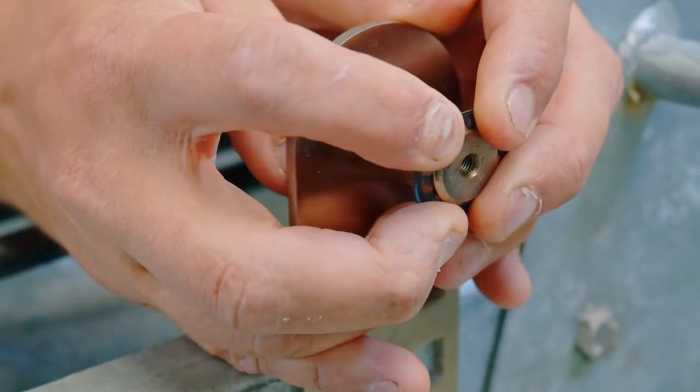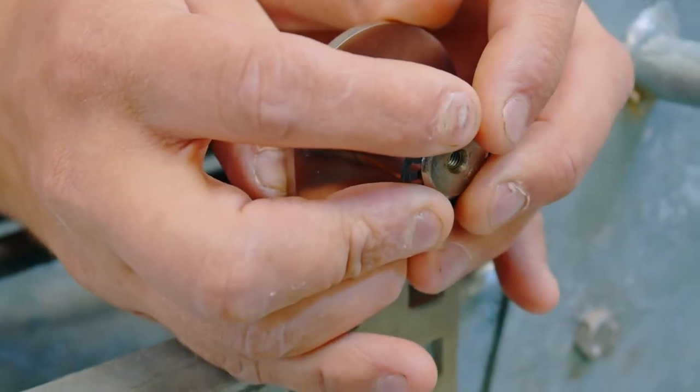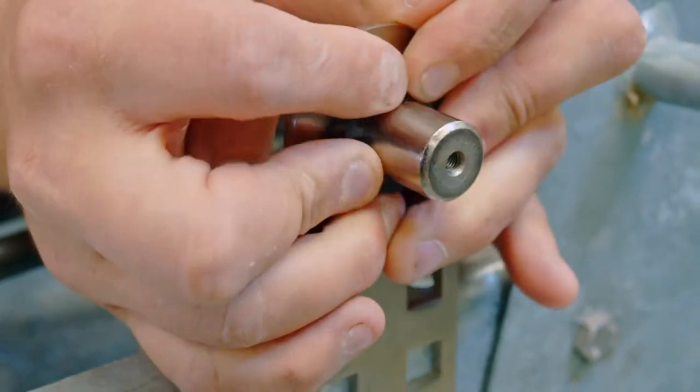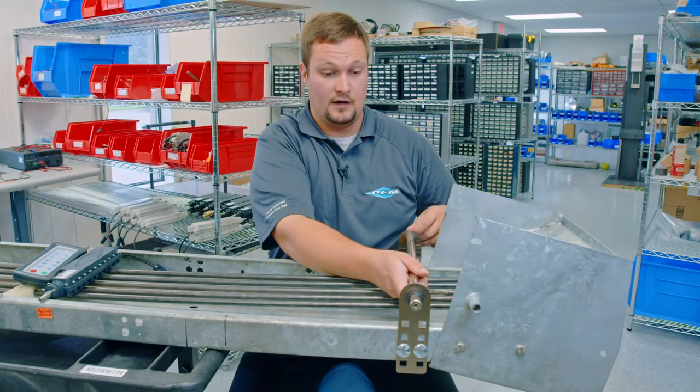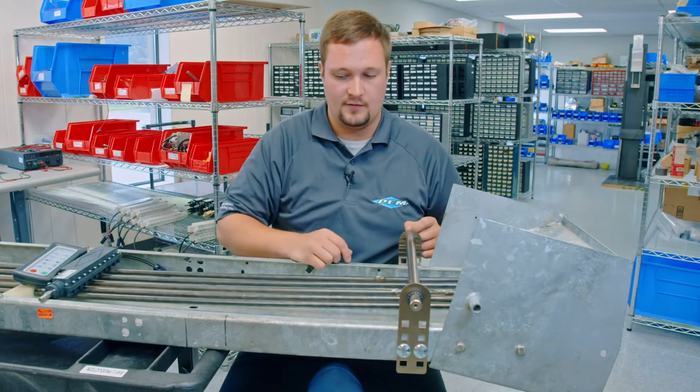Once those are torqued, the next step is to put the retaining ring on the end of the pivot rod in a way that you still have room on the other side for the other retaining ring once you're ready to put that on.